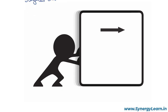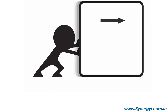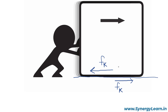Here we have a diagram in which a man is pushing a block, and as a result the block moves forward. When the block moves on the rough ground, the ground exerts kinetic friction on the block in the backward direction because the contacts slide. As a reaction, the block exerts kinetic friction on the ground in the forward direction. Since the kinetic friction on the block is in the backward direction and the block is moving forward, the work done by this kinetic friction is negative on the block.